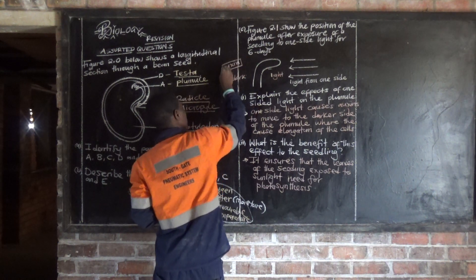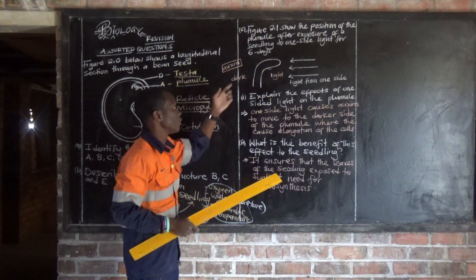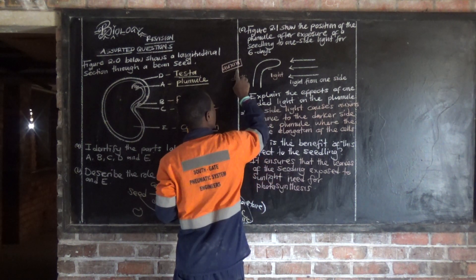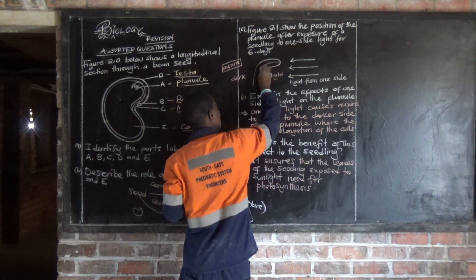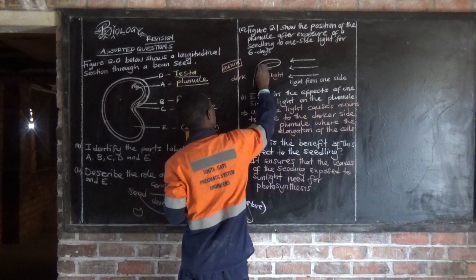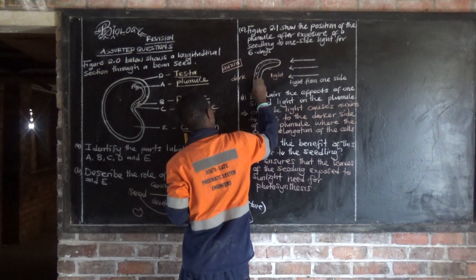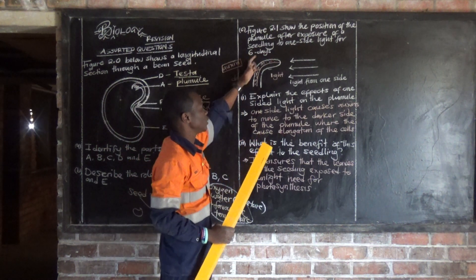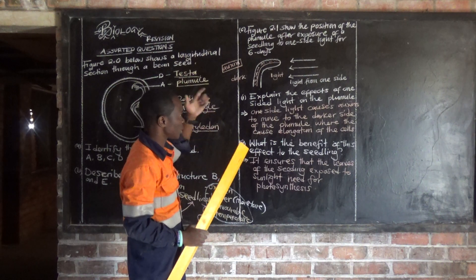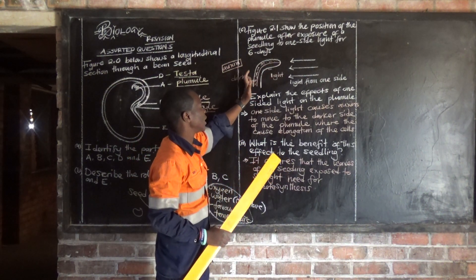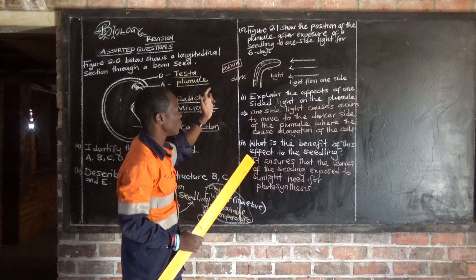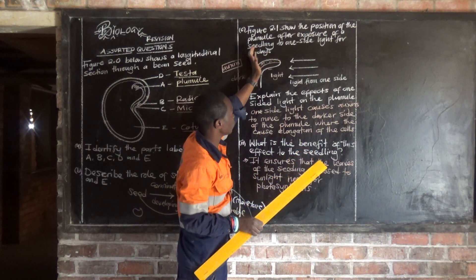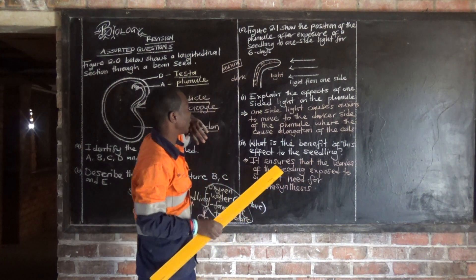This hormone promotes growth of the shoot. What's going to happen is this auxin is going to be concentrated on the dark side of the broomlet. The high concentration of the auxin on the dark part is going to cause what we call elongation to take place, and that elongation is going to move this shoot or broomlet towards where light is coming from.